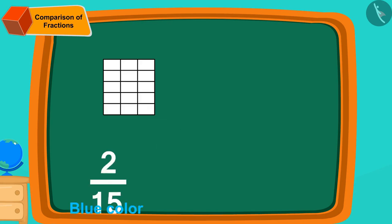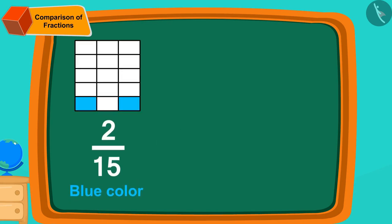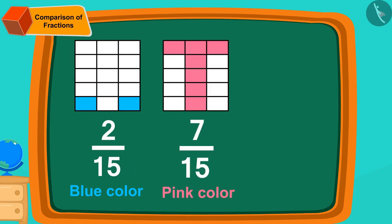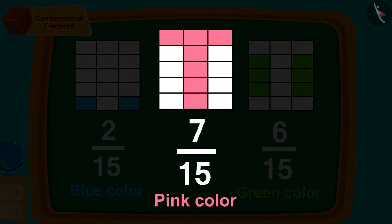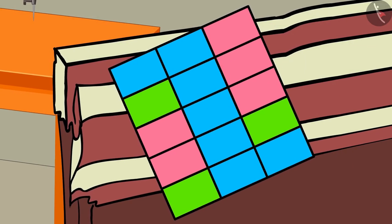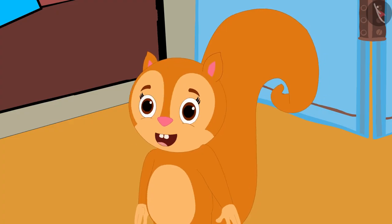Children, if we have filled blue color in two parts out of 15, pink color in seven parts, and green color in six parts, can you then identify the largest of these fractions? If you wish, you can stop the video and find the answer. Well done, children — you have found the answer correctly. The largest fraction here is seven fifteenths. Chanda's cloth is ready with her design — look how happy she looks!